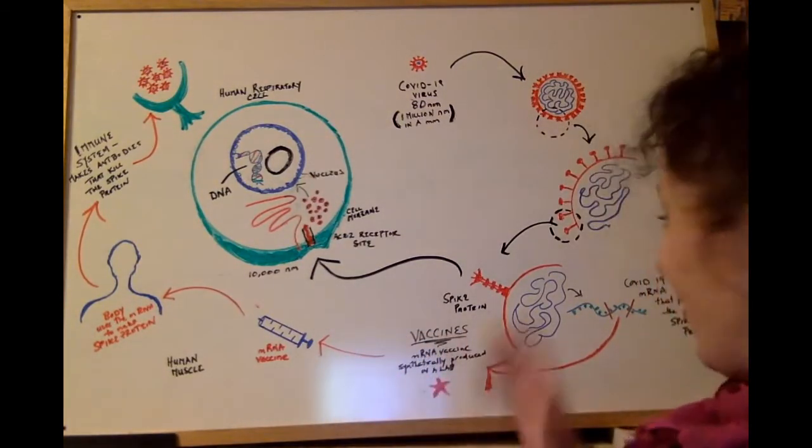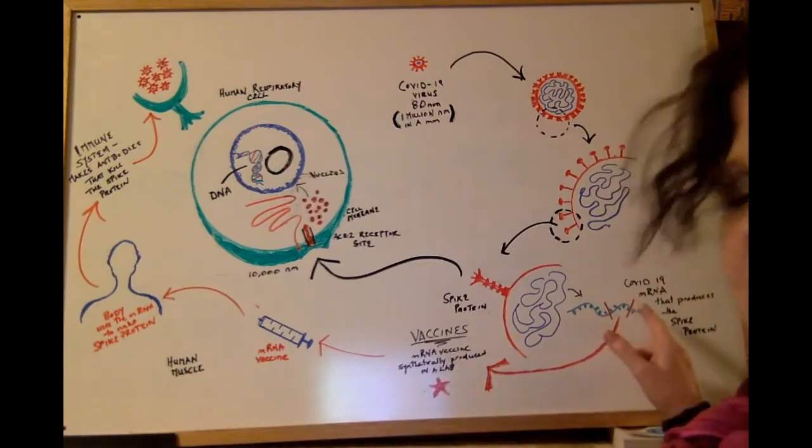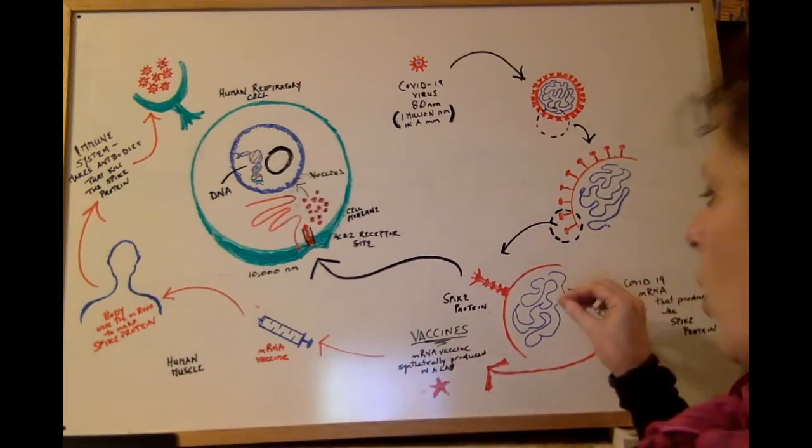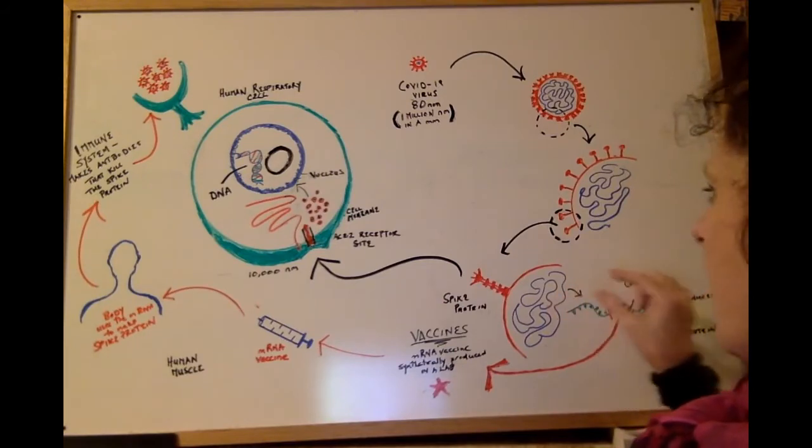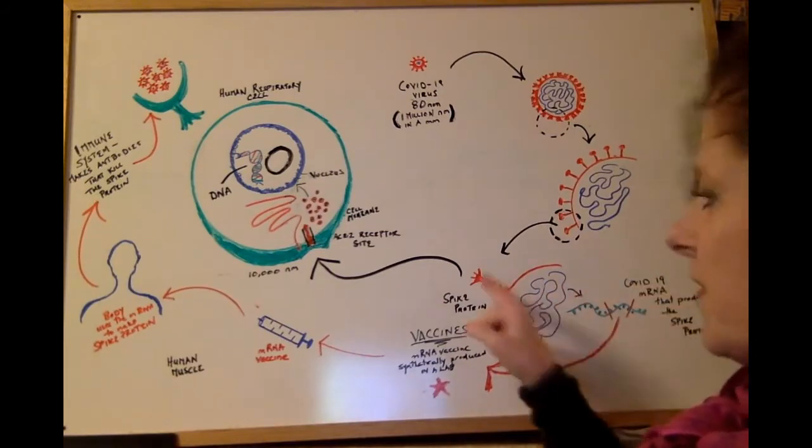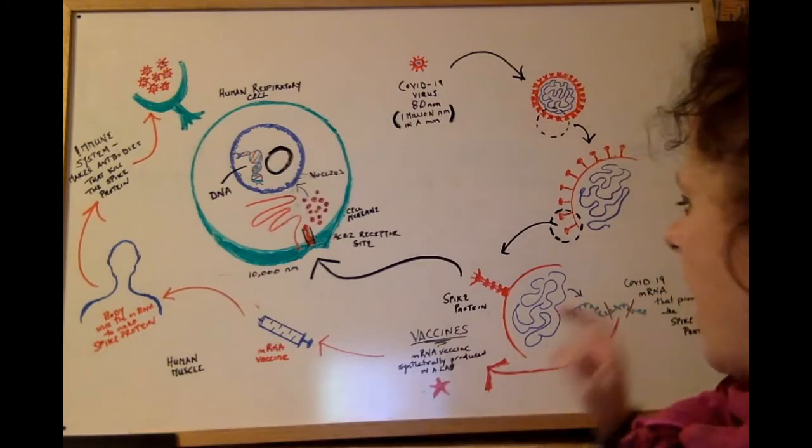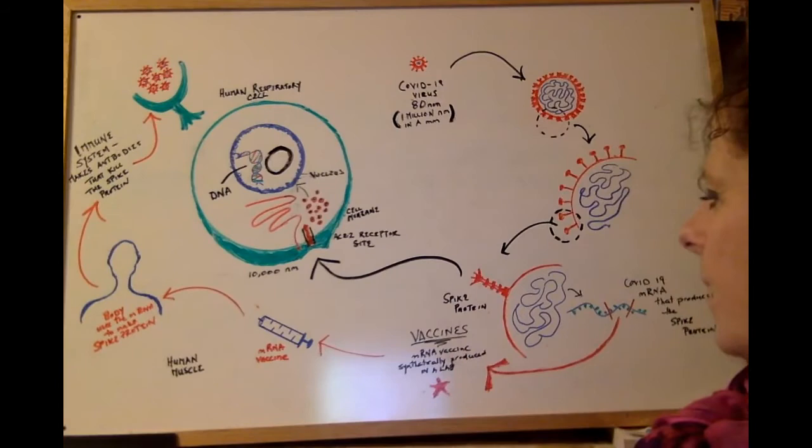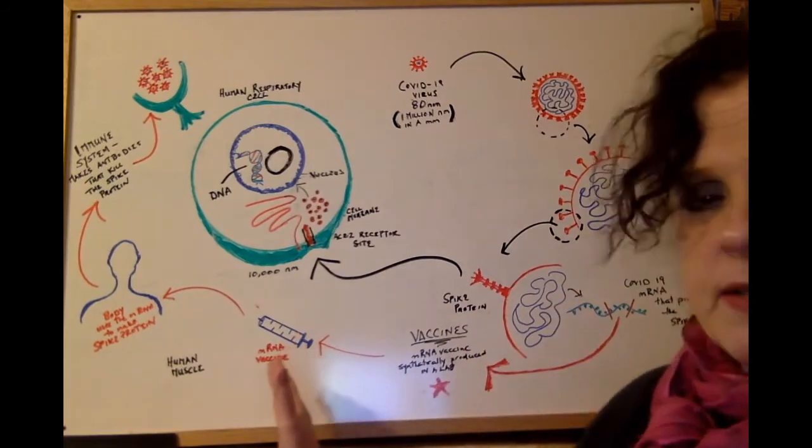I don't know how they did it, but 30 years of experience, they were able to take the messenger RNA of the COVID-19 virus that allows for the production of its spike protein, and replicate it or synthetically produce it, reproduce it in the lab, put it into vaccines.